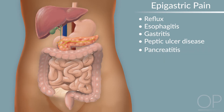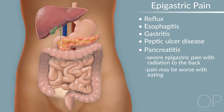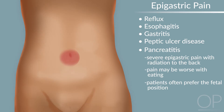Pancreatitis, described as severe epigastric pain with radiation to the back, is most frequently idiopathic in children, though medications, infections, systemic disease, trauma, and biliary disease have been implicated. Pain may be worse with eating and patients often prefer the fetal position, lying on one side with hips and knees flexed. Alternatively, it may be poorly localized or present as periumbilical pain.